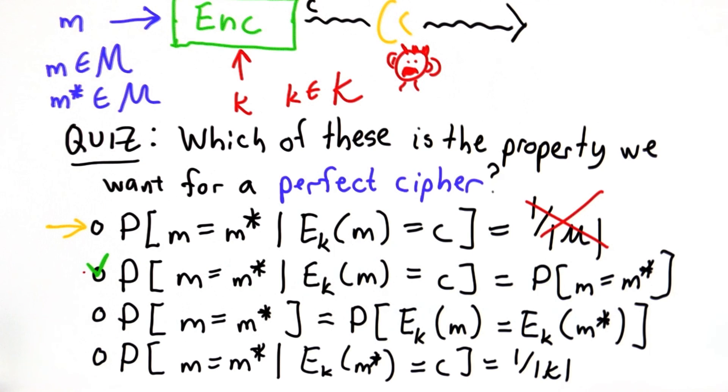So that's our definition of a perfect cipher. Now the question is can we prove that the one time pad has this property?